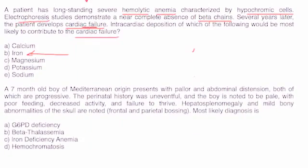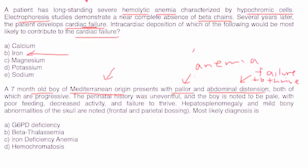Second one. Seven-month-old boy of Mediterranean origin. So that's part of the epidemiology of thalassemia. It's more common in certain geographic regions. He presents with pallor, so that's a sign of anemia. Abdominal distention, non-specific abdominal distention. Let's just keep going here. Both of which are progressive, might be related to failure to thrive. Perinatal history was uneventful, and the boy is noted to be pale with poor feeding, decreased activity, and failure to thrive.